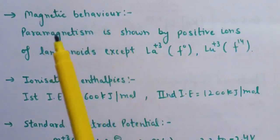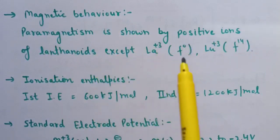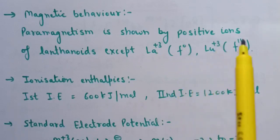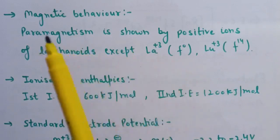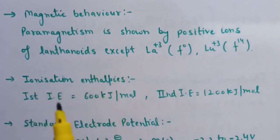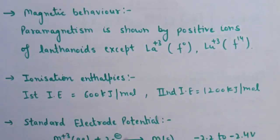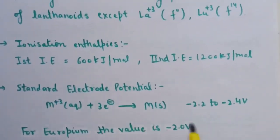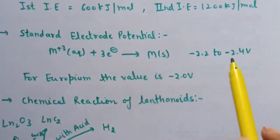Next property is magnetic behavior. Paramagnetism is shown by positive ions of lanthanoids, except lanthanum +3 (which is f⁰ — no electron in f orbital) and lutetium +3 (which has 14 f electrons, so no unpaired electrons). For these two, paramagnetism is not shown, whereas other ions show paramagnetic behavior. The first ionization enthalpy for lanthanoids is around 600 kJ/mol, and the second ionization enthalpy is 1200 kJ/mol. The standard electrode potential value for lanthanoids lies in the range of −2.2 to −2.4 V, whereas for europium the value is −2.0 V.